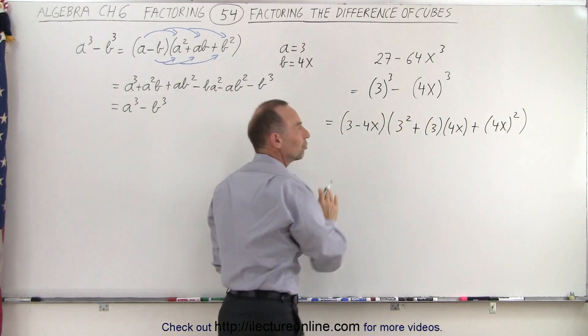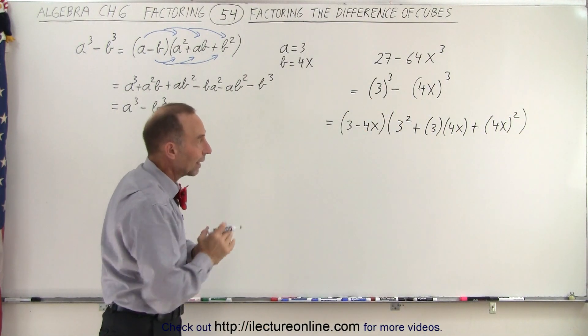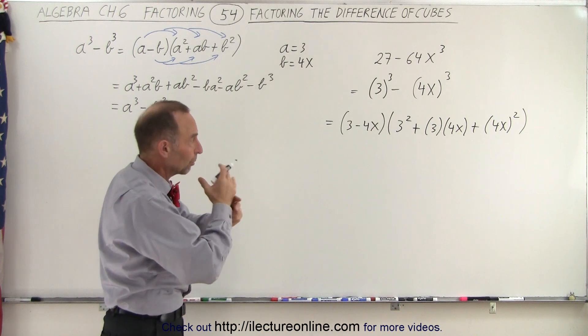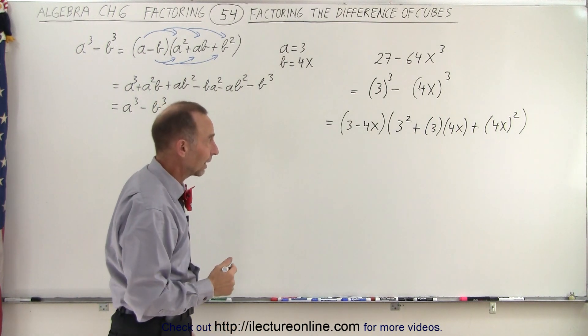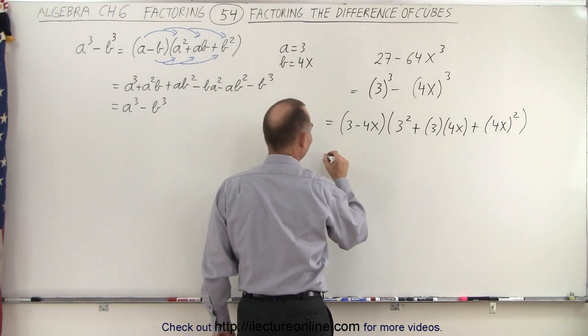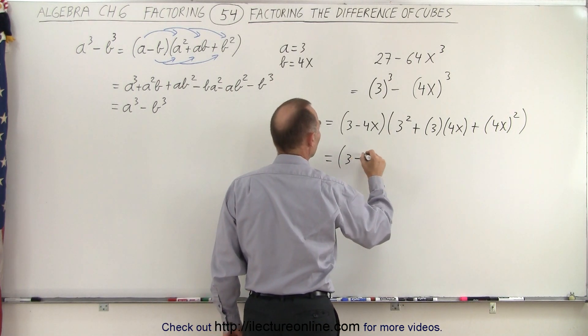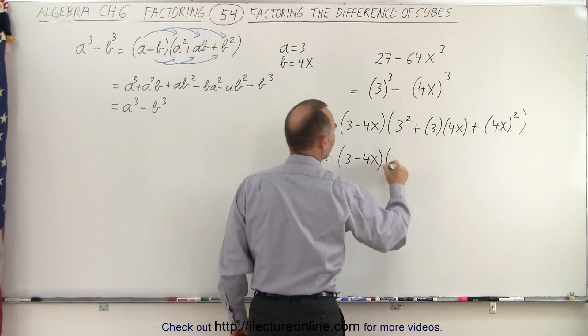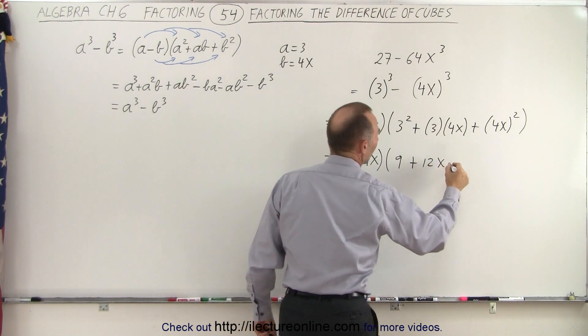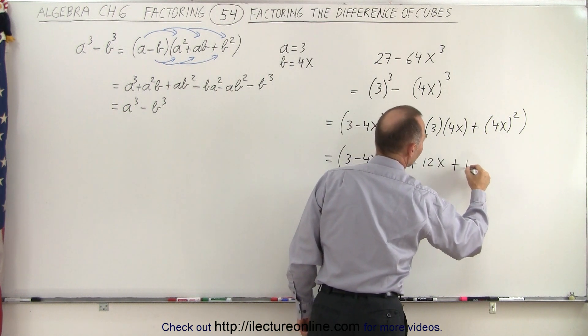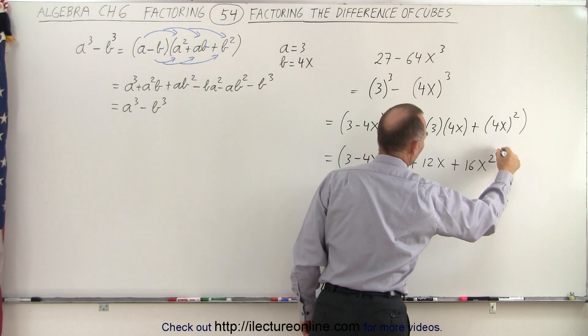Sometimes it's easier just to go ahead and write it like this first before you mentally multiply everything together, or once you feel comfortable, you can just go ahead and multiply it together right away. But this ensures we are less likely to make mistakes, so this becomes 3 minus 4x times 9 plus 12x plus 16x squared.